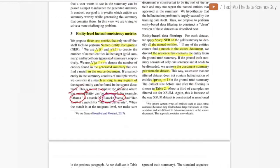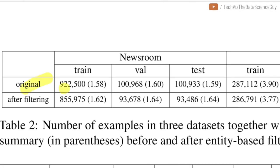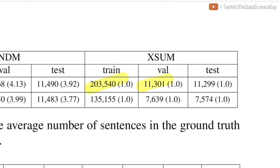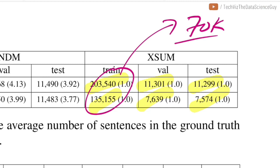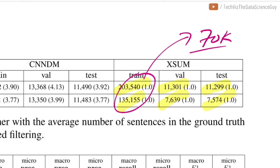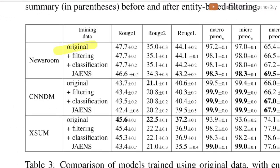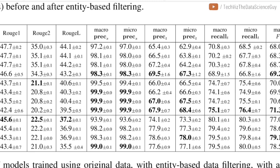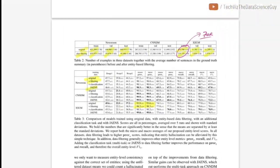Looking at table two, the original dataset had certain numbers of examples; after filtering they were reduced — roughly 10% of the data removed for some datasets. For XSum, almost 70,000 samples were hallucinated, meaning the model was destined to learn those patterns. After evaluating original versus filtered data, for XSum the precision improved from 93.9% to 98.2%, meaning the model was only hallucinating about 2% of the time. This method clearly worked.